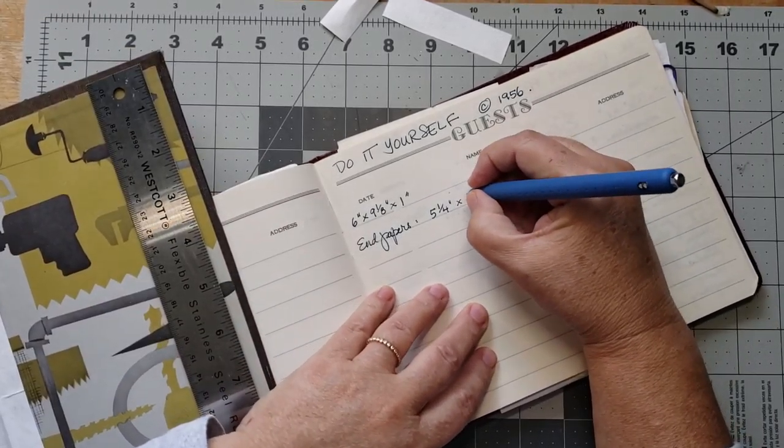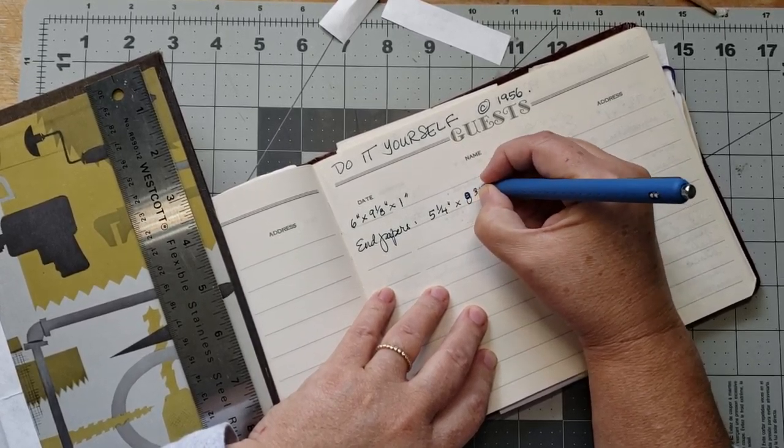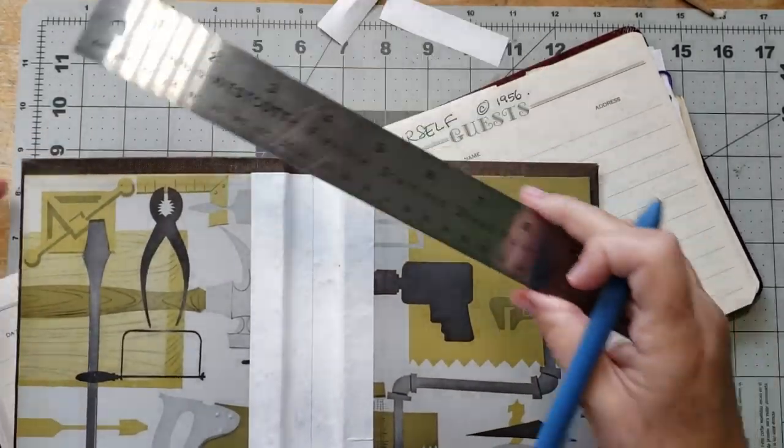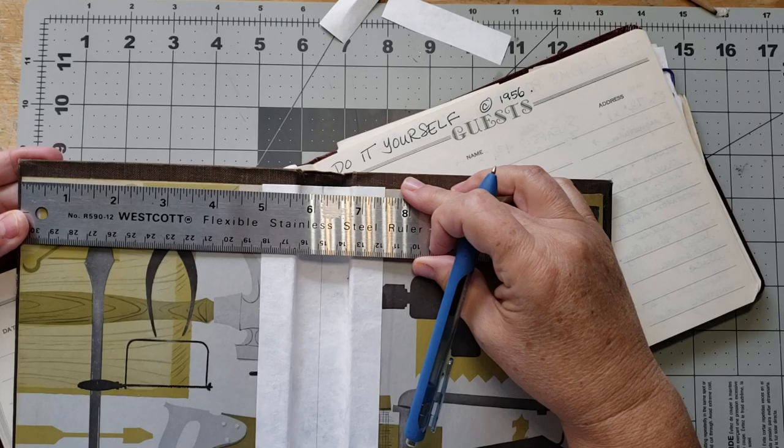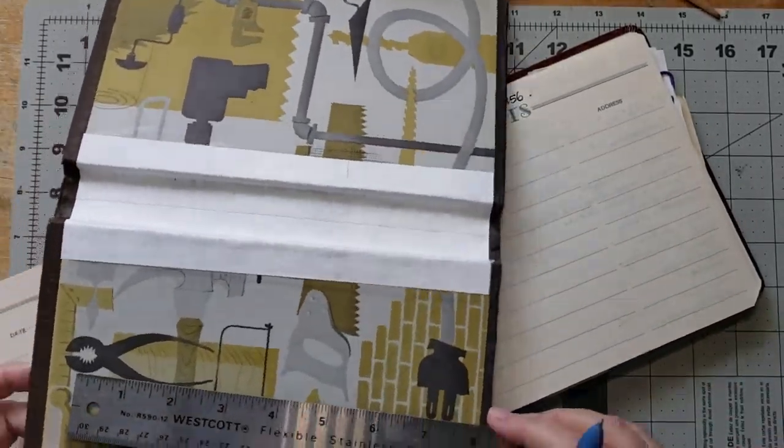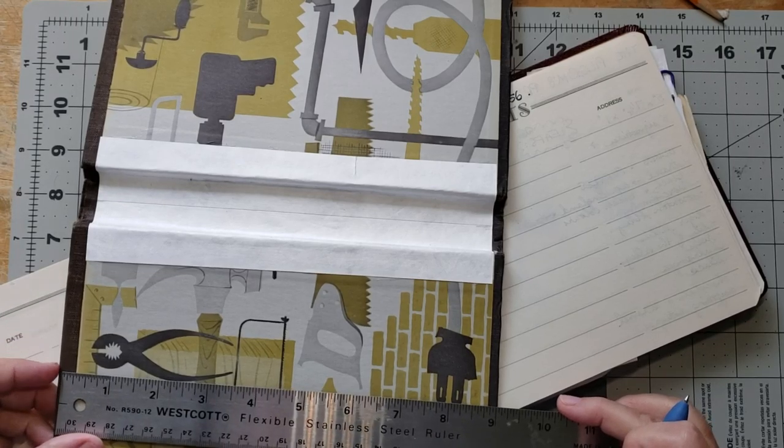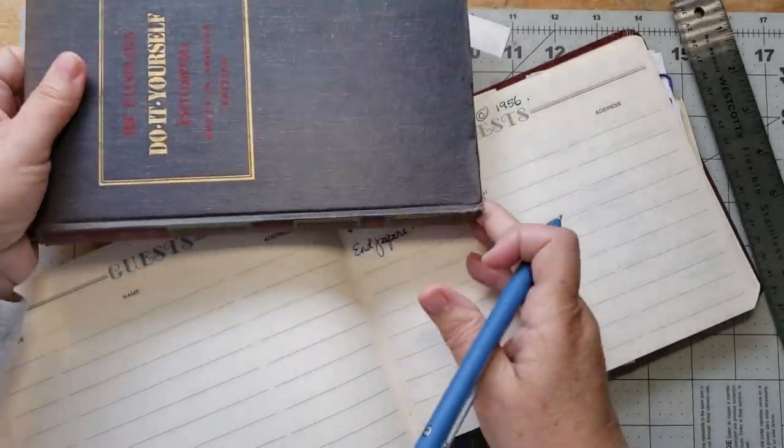Let's see. Yes, eight and three quarter. Eight and three quarter. Now I'm going to double check. These old books are not always symmetrical, so don't assume that one endpaper for one side of your book is going to be the same as your endpaper for the other side of the book.